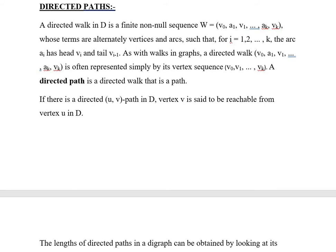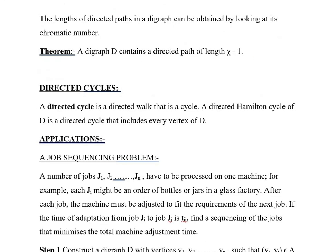the arc a_i has head v_i and tail v_{i-1}. As with walks in graphs, a directed walk v_0 a_1 v_1 ... a_k v_k is often represented simply by its vertex sequence v_0 v_1 ... v_k. A directed path is a directed walk that is a path. If there is a directed uv path in the digraph D, vertex v is said to be reachable from vertex u in D. The lengths of directed paths in a digraph can be obtained by looking at its chromatic number.